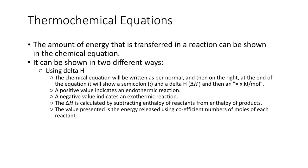So the amount of energy that is transferred can be shown in a chemical equation in two different ways using delta H. The first way: the chemical equation will be written as per normal, and then on the right at the end of the equation, it will show a semicolon, then a delta H, and then a value in kilojoules per mole. So it's saying effectively this is the amount of energy in kilojoules per mole that this reaction will produce or consume.